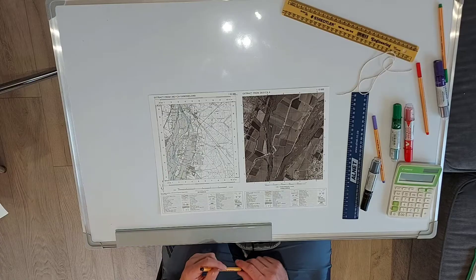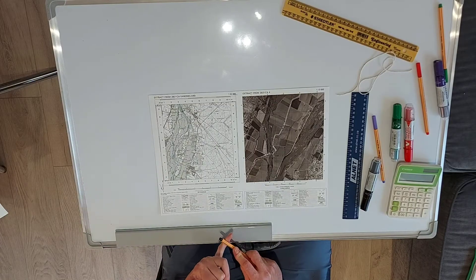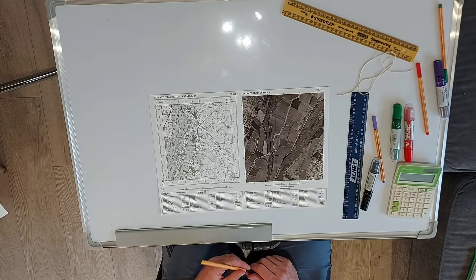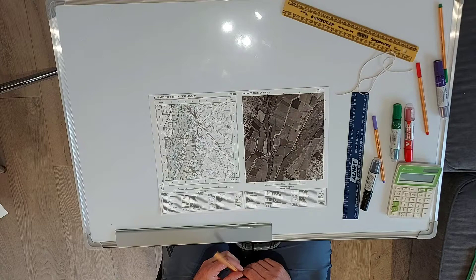Now mapwork calculations for you guys, there's two sections: one is coordinates and another one is working out the distance on the map. Now our first part is coordinates.